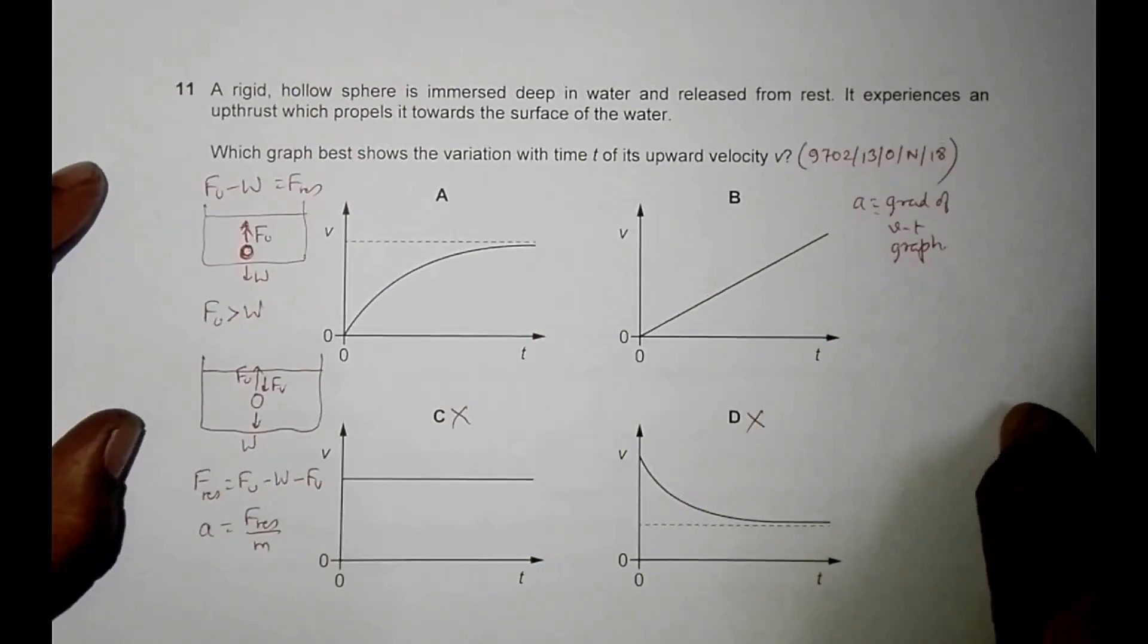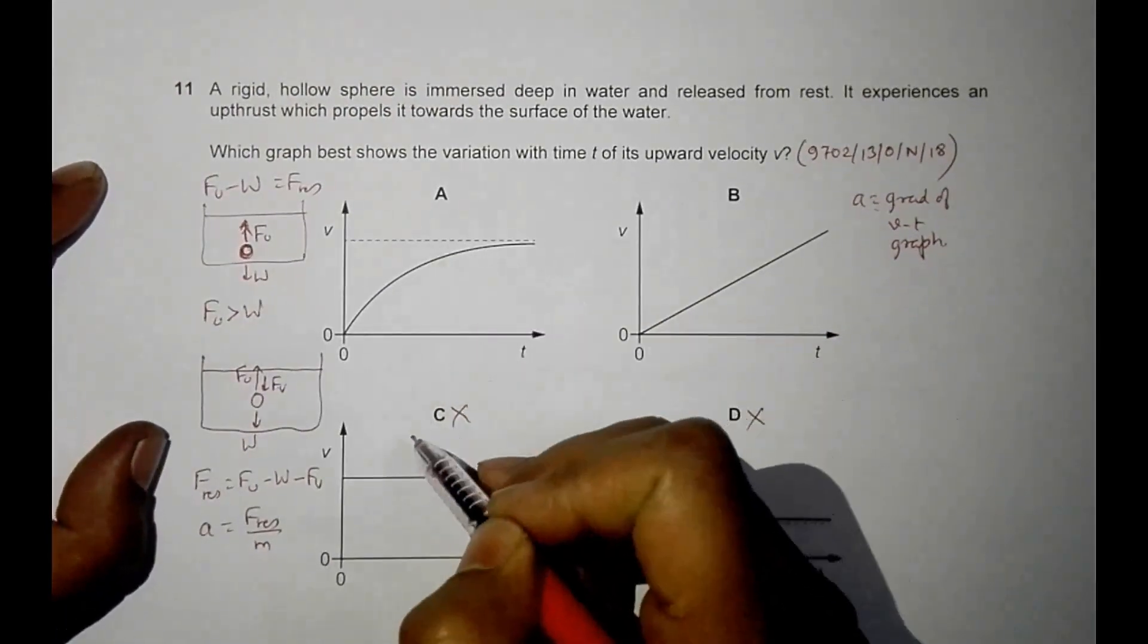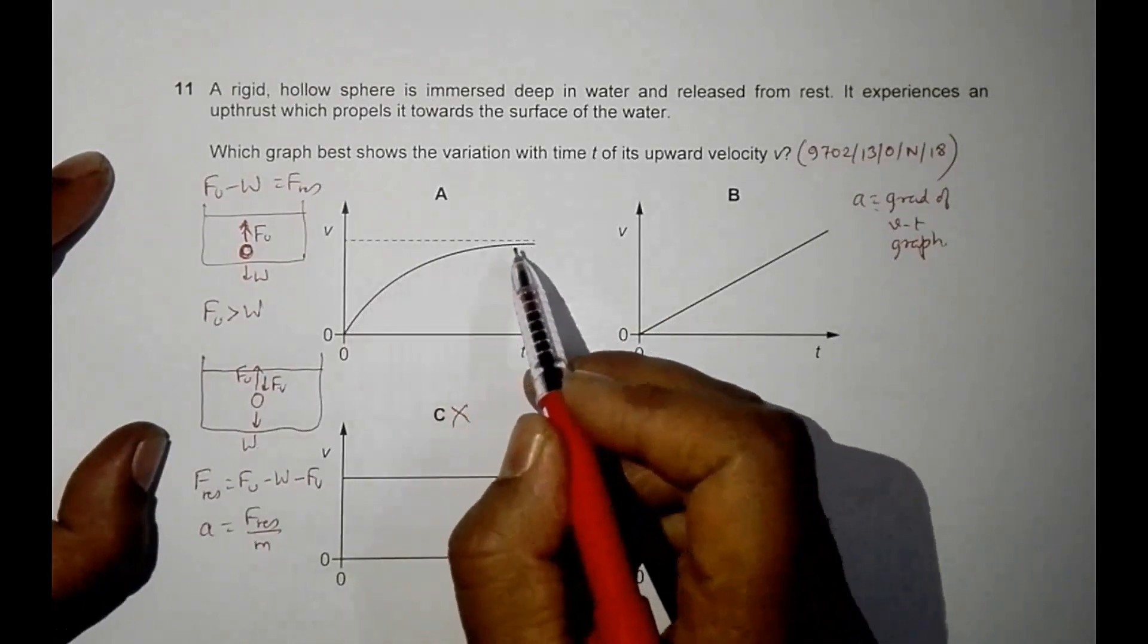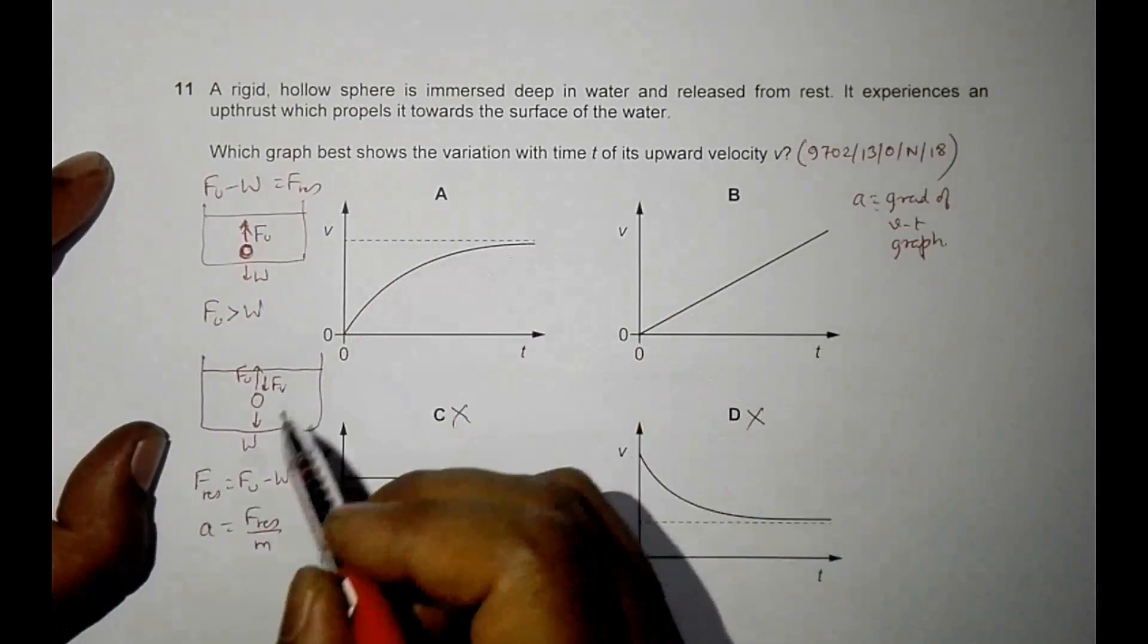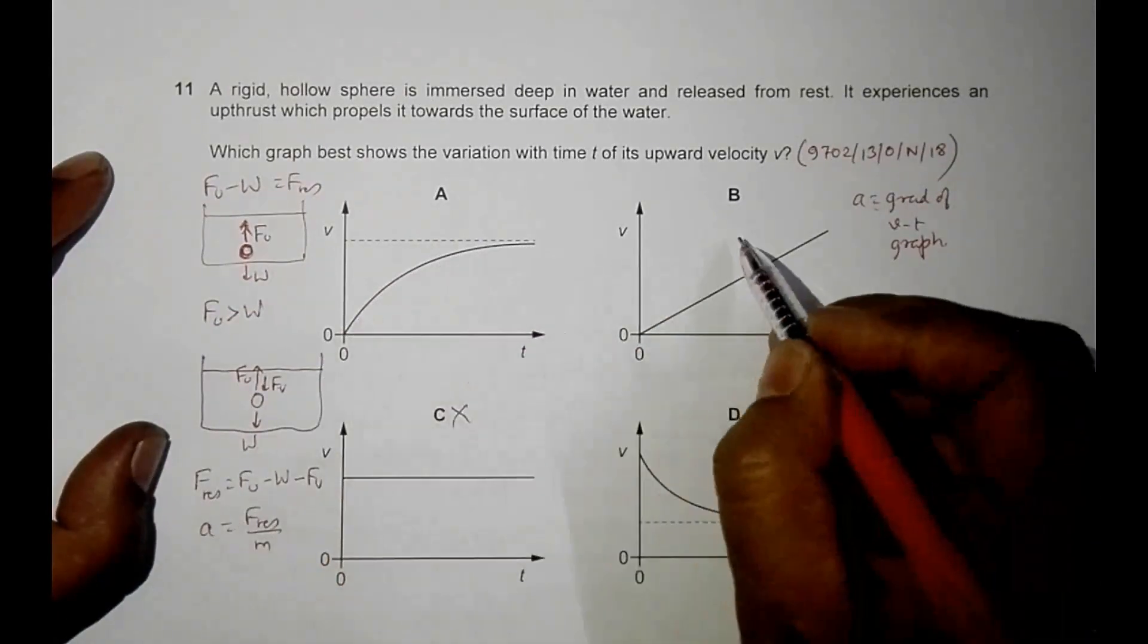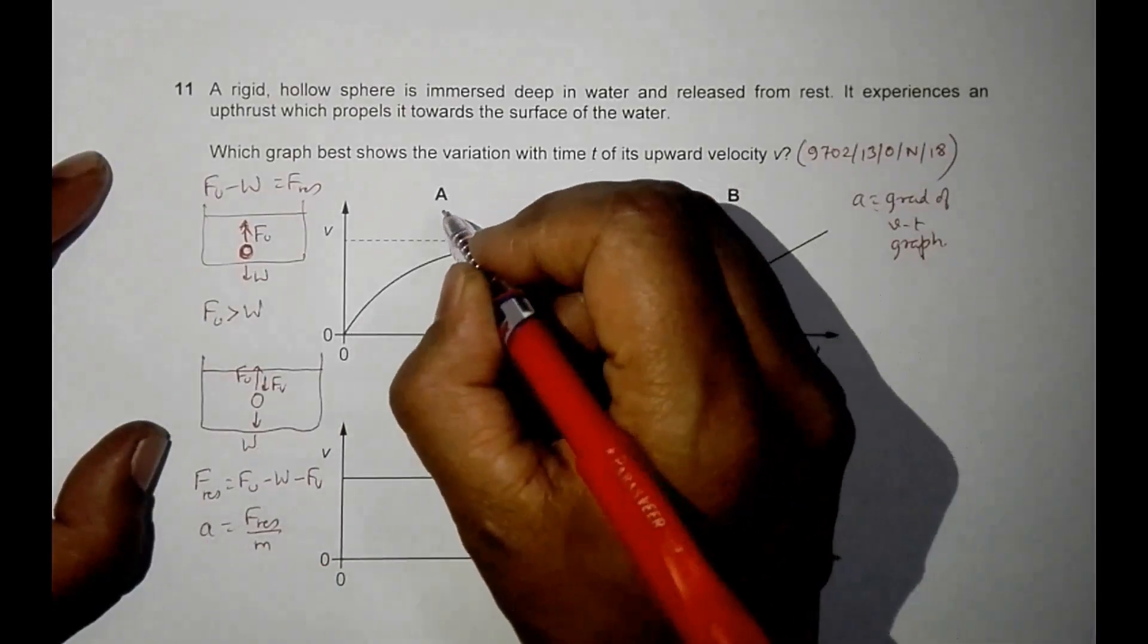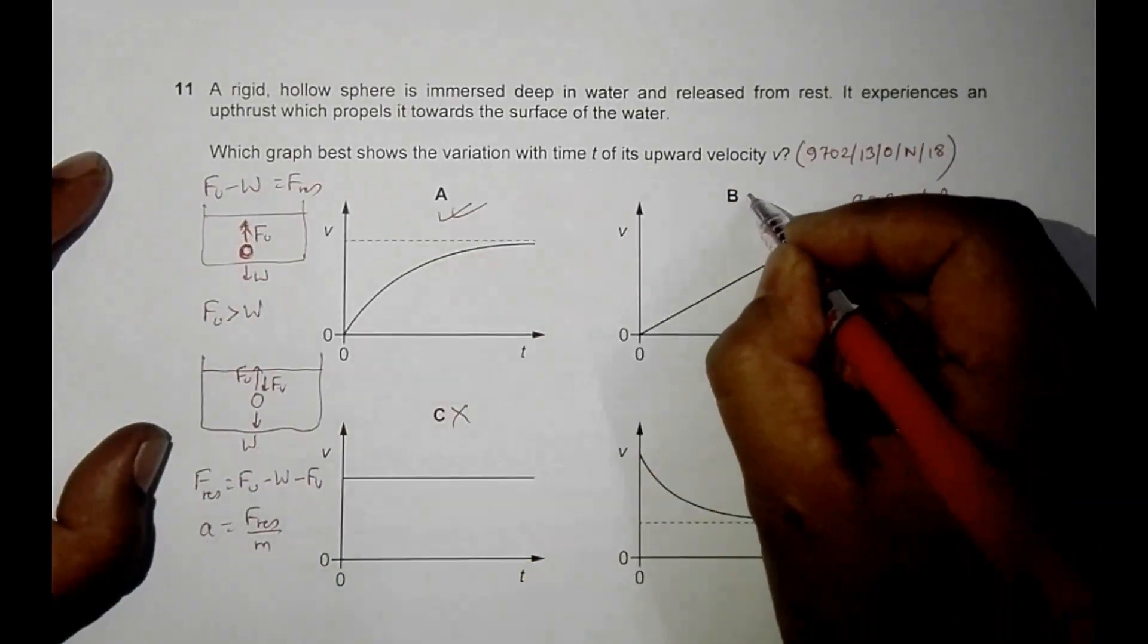And that is definitely choice number A. In choice number A, the gradient of the graph is decreasing which means acceleration is decreasing, which means the resultant force is decreasing. But here it's the same, so that's why our correct choice should be choice number A, and B disqualifies.